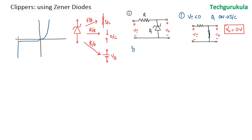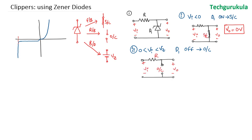The second case is when VI is greater than 0 and less than Vz. In this case, diode D1 would be reverse biased and off. We can take this to be an open circuit because it hasn't entered the breakdown region yet. So the output voltage would be equal to the input voltage.